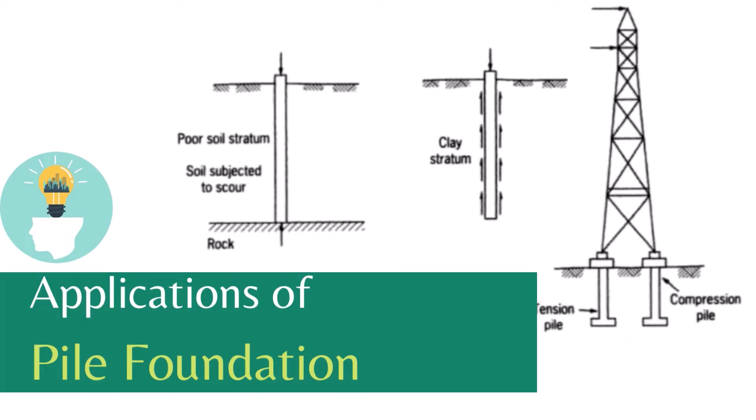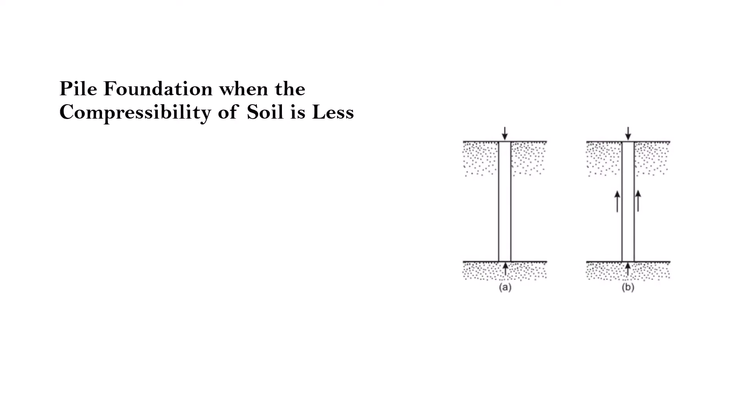Number one: Pile foundation is used when the compressibility of soil is less. If the site does not have a sufficient layer of soil to take up the load from the superstructure and transfer it safely, we use pile foundation. Piles are constructed to transmit the load from the superstructure to the rock strata underlying the soil.